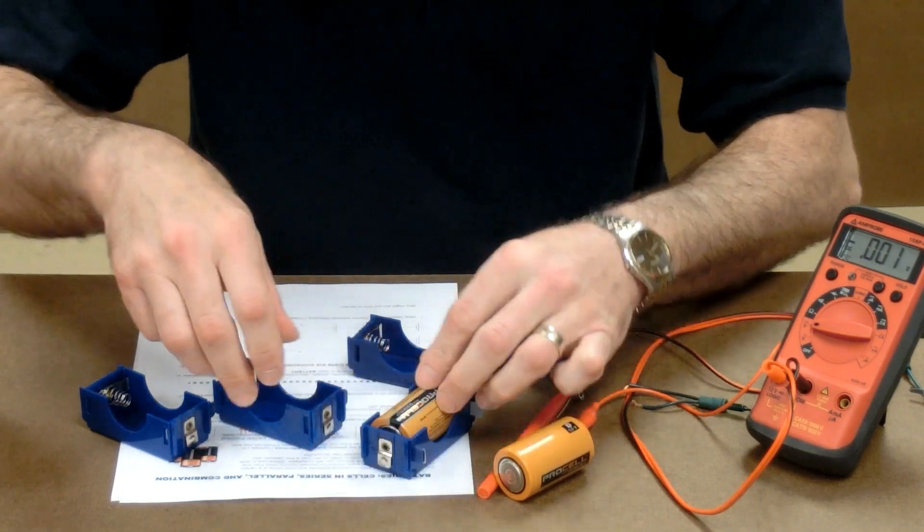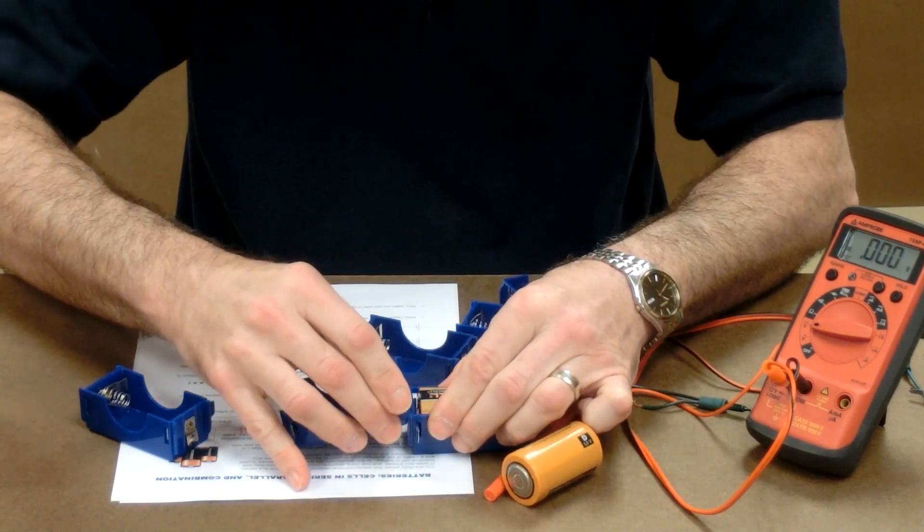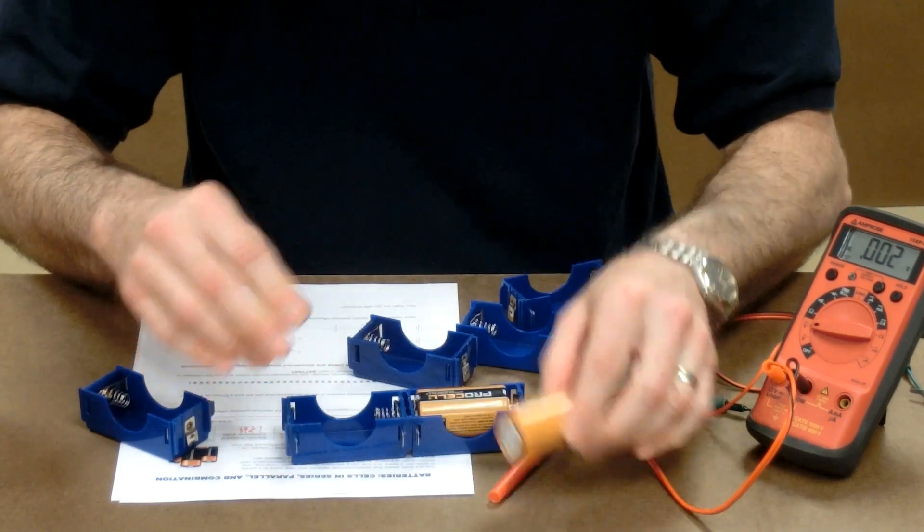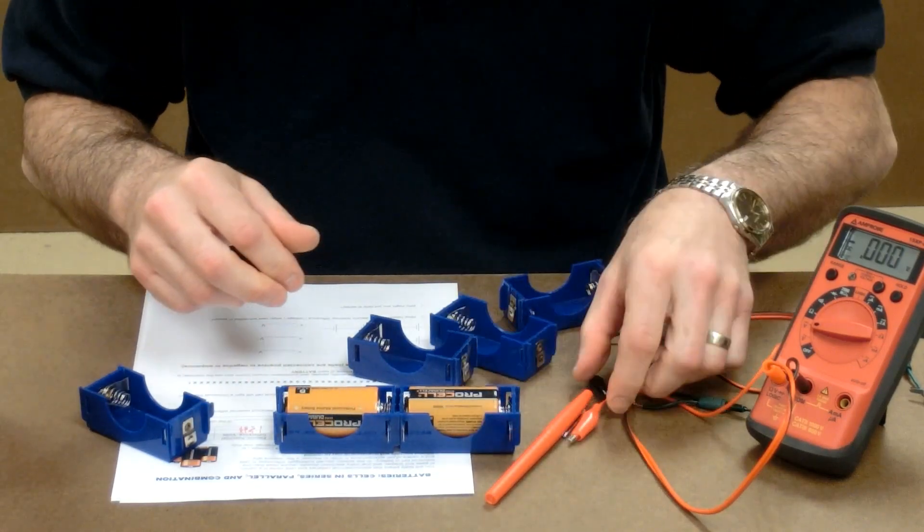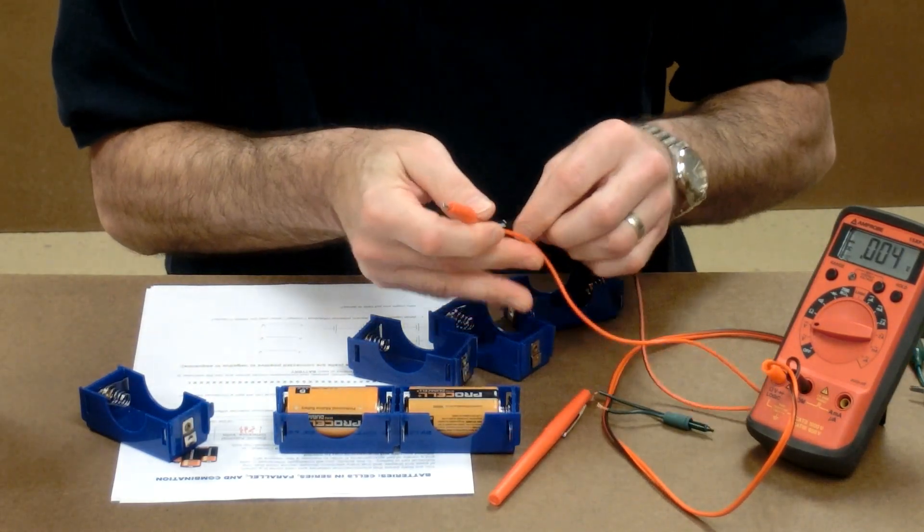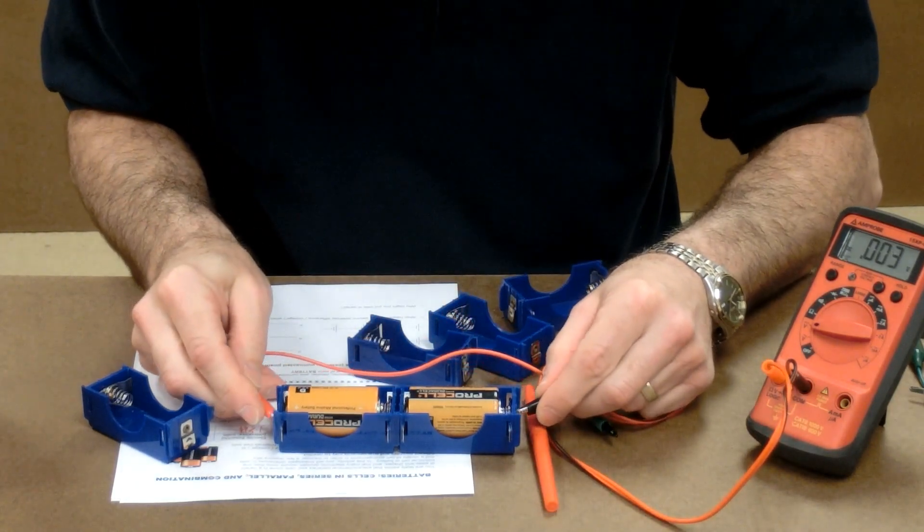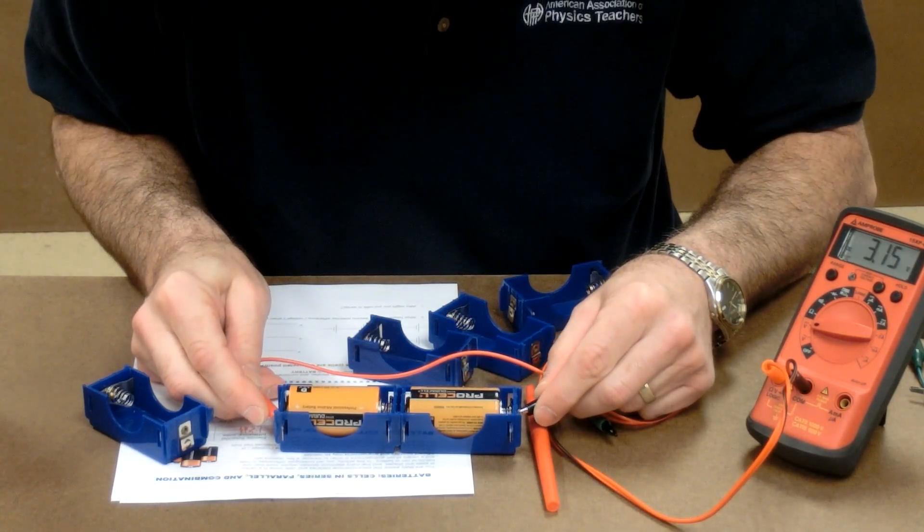The science supply catalogs sell these D-cell holders that are really easy to put together. Here are two cells in series. The voltage of two in series, 3.15.